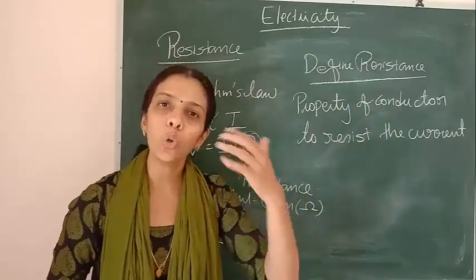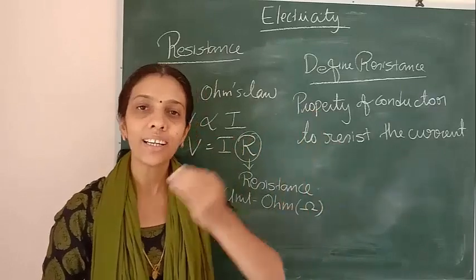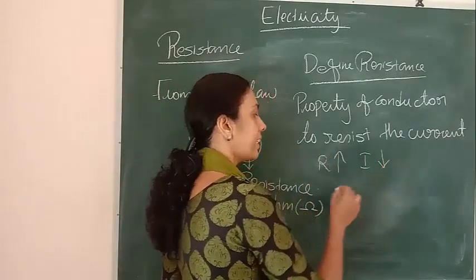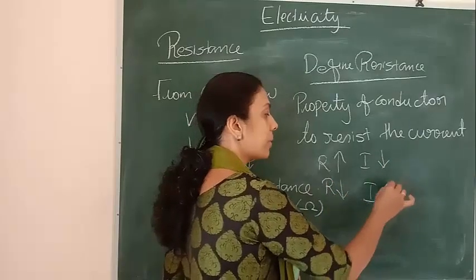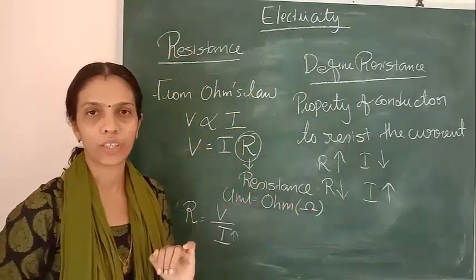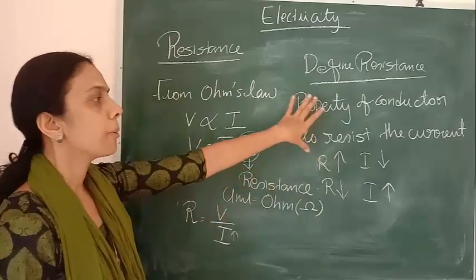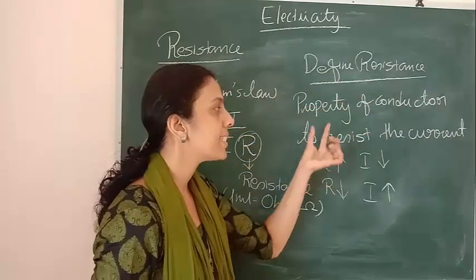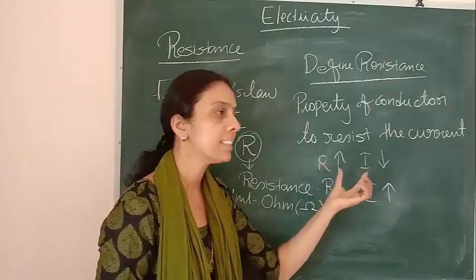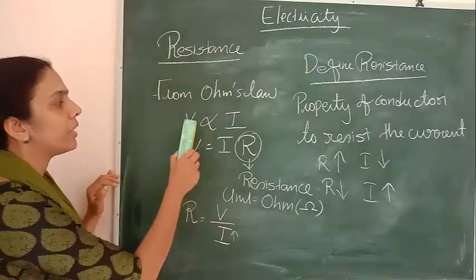If we don't want that much current, we can apply resistance. If we are applying more resistance, the output current will be less. If resistance is more, current will be less. If resistance is less, current flowing through the conductor will be more. Resistance will be stopping the flow of current.